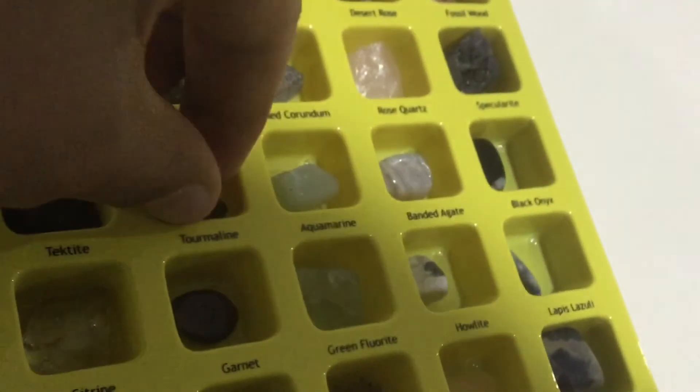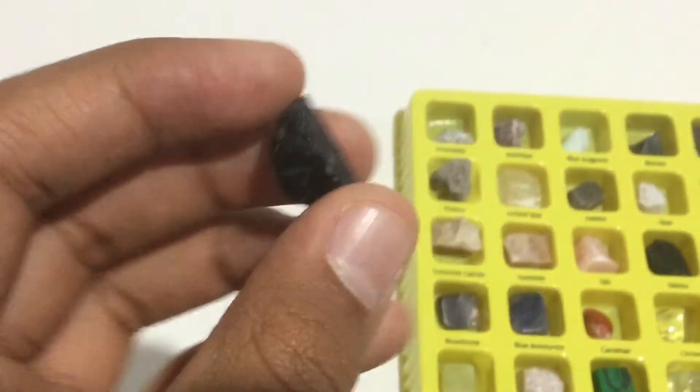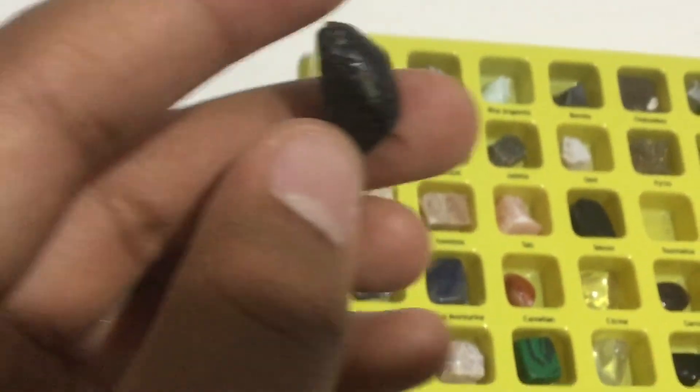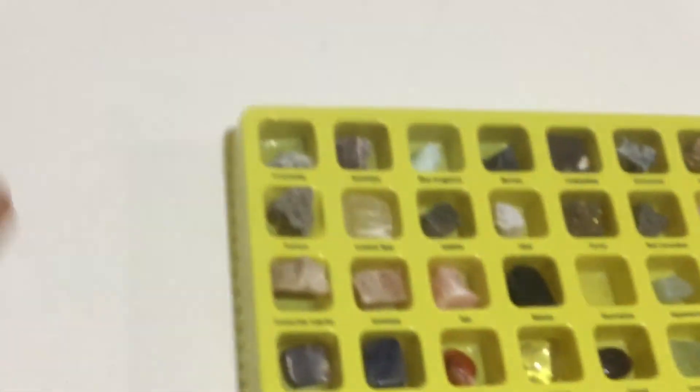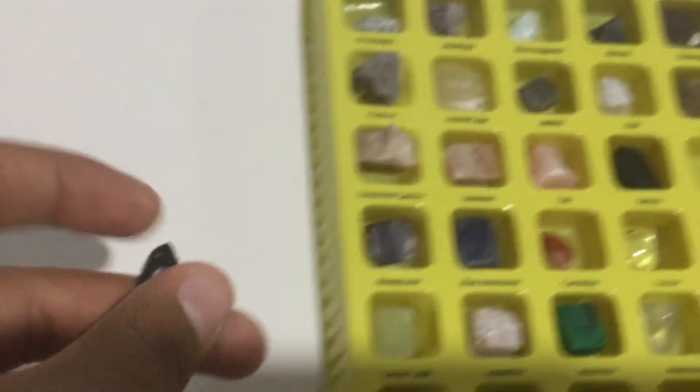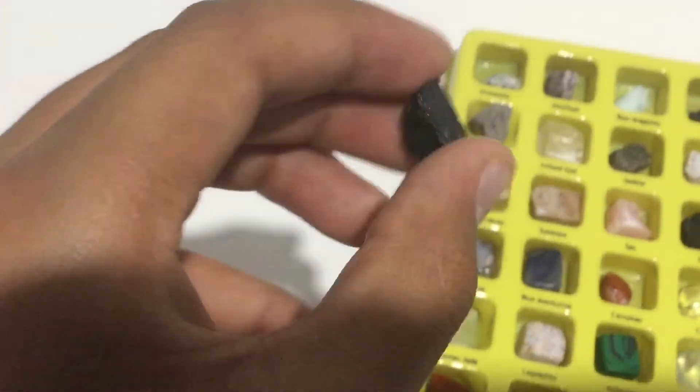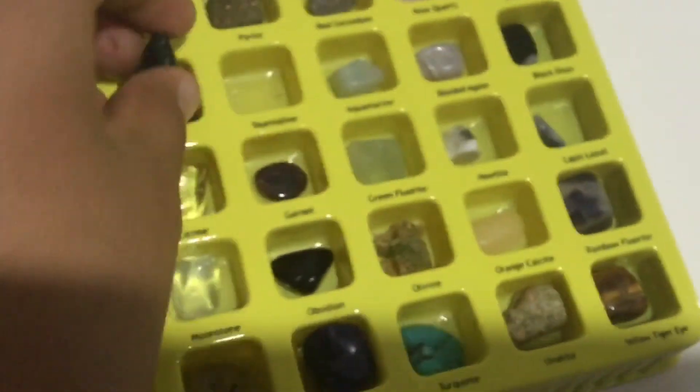This is the second to last gem. Tourmaline. Thing about this is there's different colors you can get. Sometimes it's like a watermelon color where the outside is green and the middle is red and it's see-through. This is like a black type.